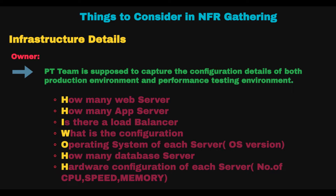The key points are: how many web servers, how many app servers, is there a load balancer, and what is the configuration. The operating system of each server — like OS version Solaris 9, AIX, Red Hat, or Linux. How many database servers the infrastructure contains. Hardware configuration of each server, like number of CPUs, speed, and memory — for example, a 1.7 GHz processor with 64 MB cache, 16 GB memory, and 100 GB hard disk. Software on each server with versions, like a web app server, database server, WebLogic 8.1, a premium server, Oracle 10G Enterprise. Note that normally the OS is Linux or Solaris because it is fast and secure.